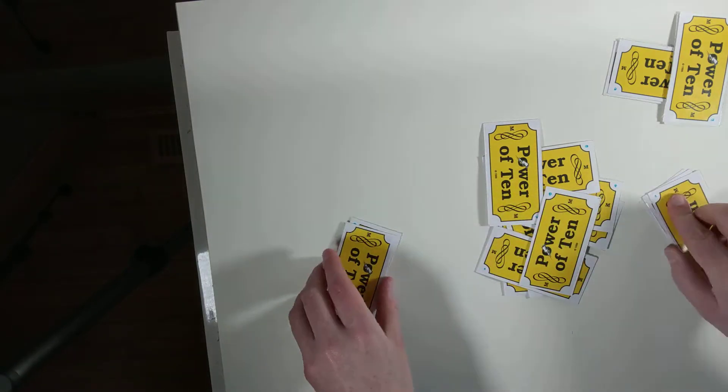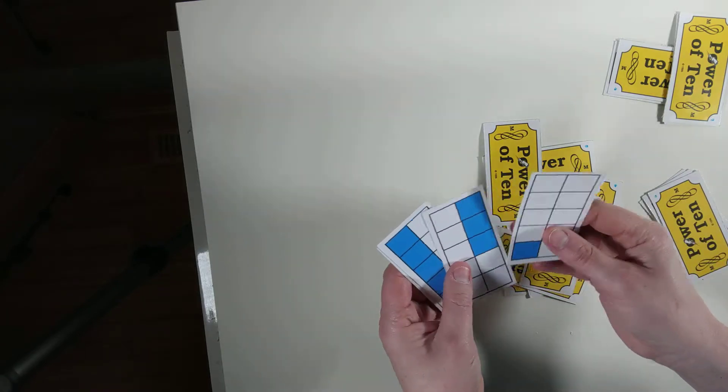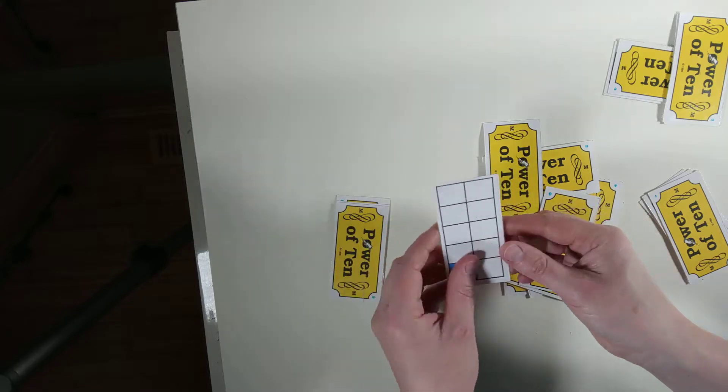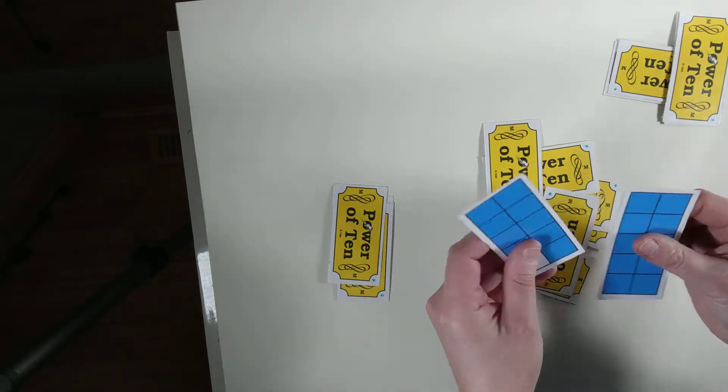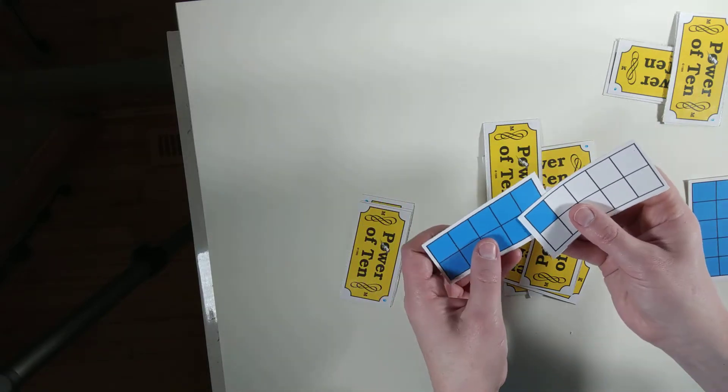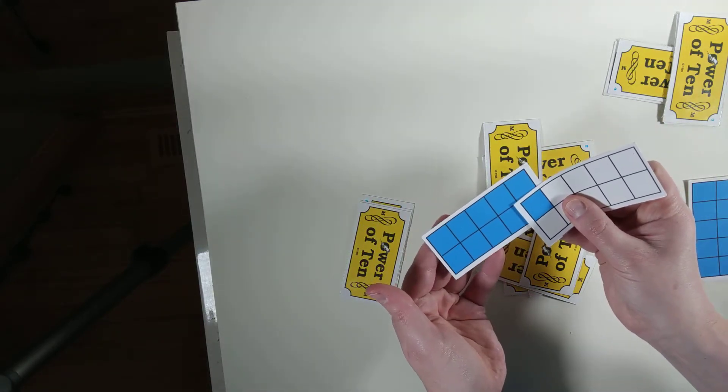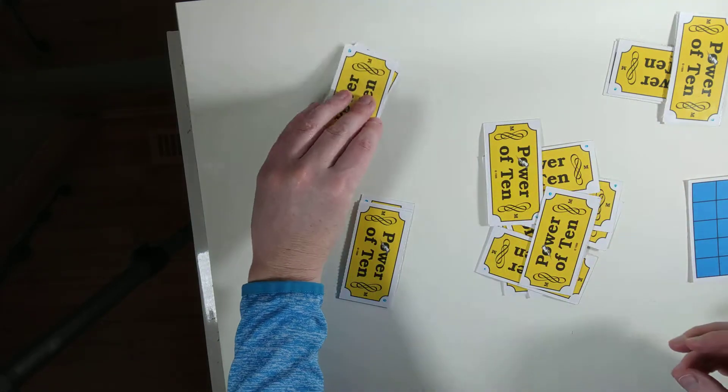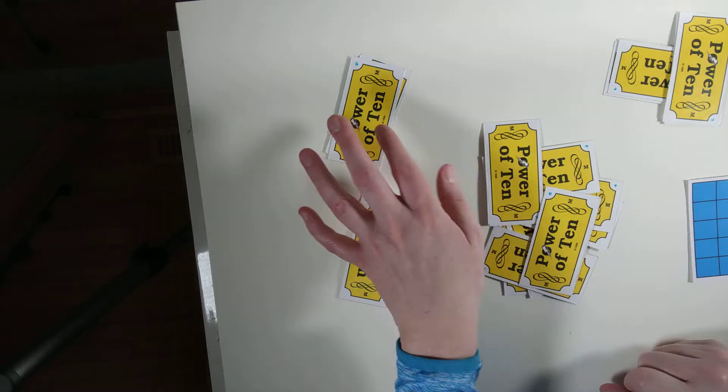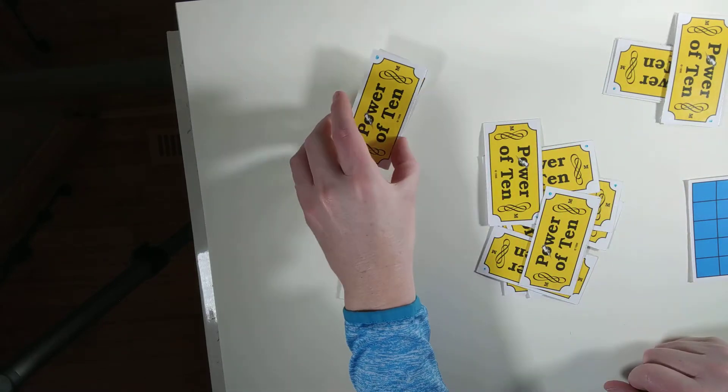And then it would be their turn, and they might say, do you have a nine? So they would look in their pile and say yes, I do. So this person would be able to match those up as making ten and put it in their pile. That's pretty much all there is to the game. You just keep playing until all the cards are gone, and then count up how many pairs you got.